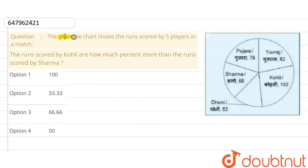Hello guys, the question is: the given pie chart shows the runs scored by 5 players in a match. The runs scored by Kohli are how much percent more than the runs scored by Sharma? The options are 100, 33.33, 66.66, and 50.